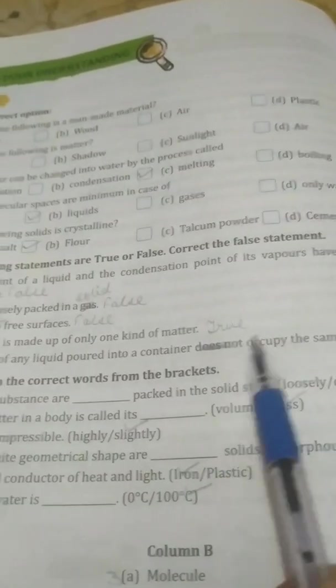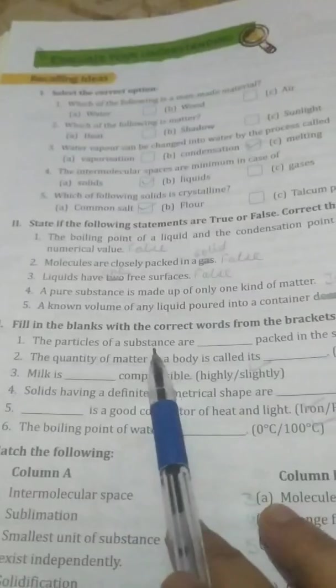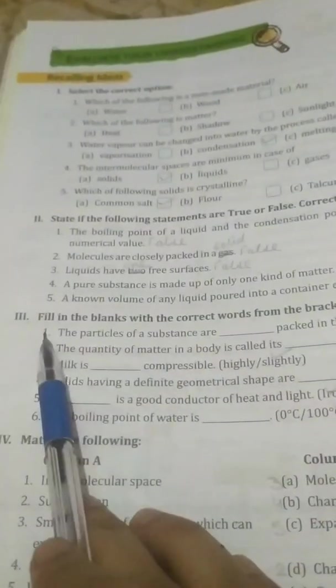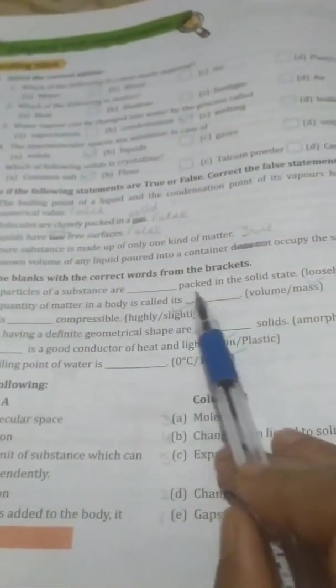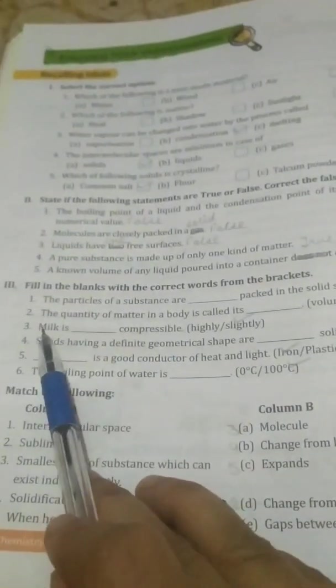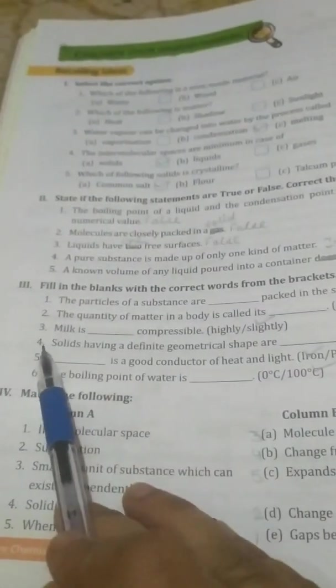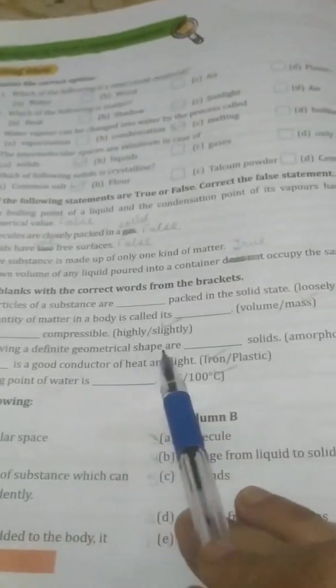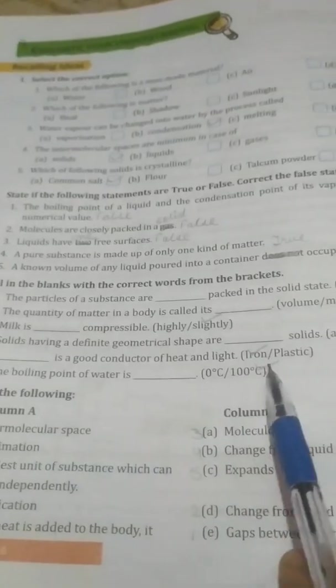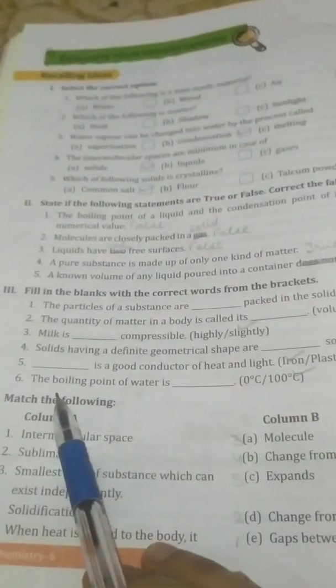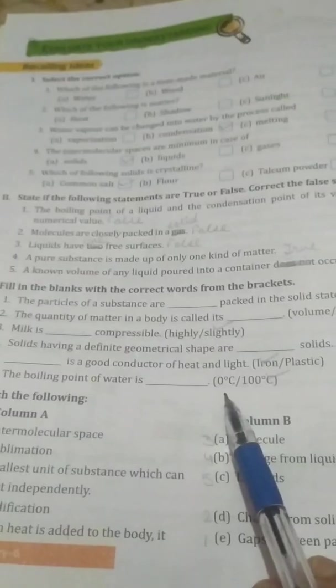Third part is fill in the blanks with the correct words from the brackets. First one, the particles of substance are closely packed in the solid state. Second, the quantity of matter in a body is called its mass. Third, milk is slightly compressible. Fourth, solids have a definite geometrical shape are crystalline solids. Fifth, iron is a good conductor of heat and light. Sixth, the boiling point of water is 100 degrees Celsius. And if we ask the freezing point of water, that is 0 degrees Celsius.